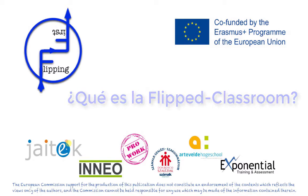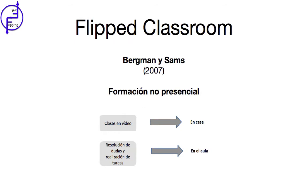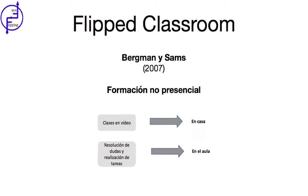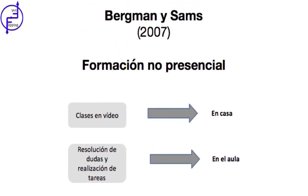¿Qué es la Flip Classroom? En 2007, Jonathan Bergman y Aaron Sams, dos profesores de Química, se unen para realizar grabaciones de vídeo de sus clases con el objetivo de que el alumnado que, por diversas razones, no podía asistir a clase, pudieran acceder a los contenidos. Se dieron cuenta de que estas grabaciones eran también seguidas por un número importante de alumnos que sí asistían de forma presencial. De esta forma, el alumnado aprovecha las clases presenciales para resolver dudas y realizar diferentes actividades relacionadas con los contenidos.